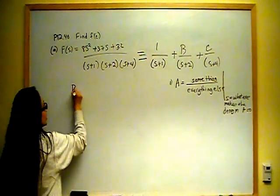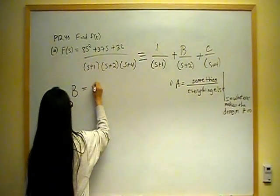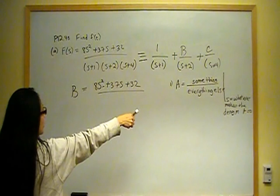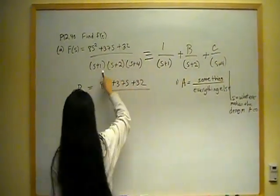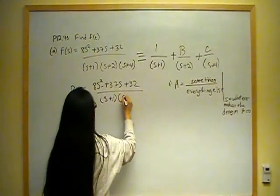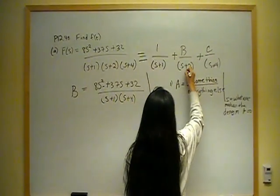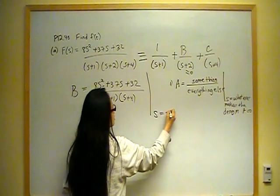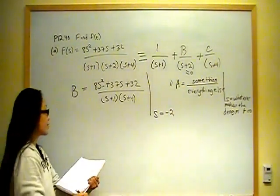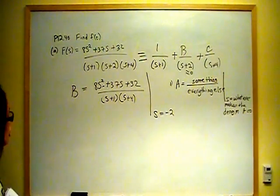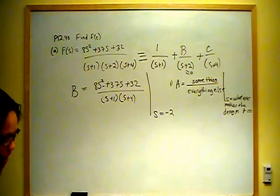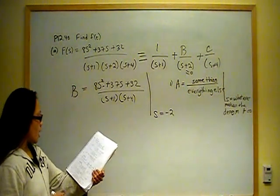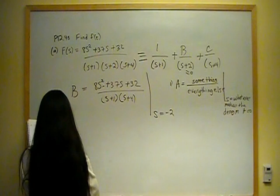Now we're going to find B, following those exact same rules. B is equal to: on top, the same thing — 8S squared plus 37S plus 32 — over everything else that is not S plus 2, which is S plus 1 times S plus 4. Evaluate it at whatever makes the denominator of B equal to zero. So when is S plus 2 equal to zero? That's when S is equal to negative 2. I'm at the Tigard Library and I need to get my son dinner, so I think we're only going to have time for part A — but when you evaluate that, you find B is equal to 5.